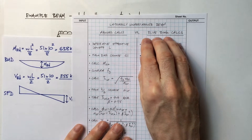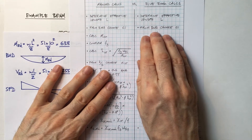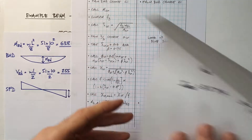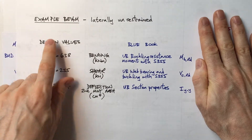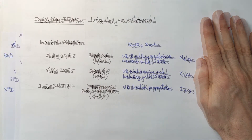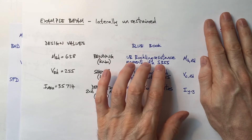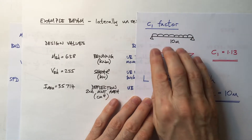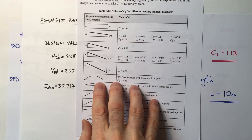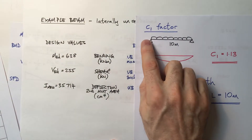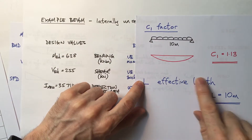If you're going to use the blue book method, you still have to work out the effective length and C1 factor, and then you just look up the buckling resistance moment in the blue book. Here's the beam summarised with its design values — section properties and shear just the same as for a restrained beam, buckling resistance moment to be looked up in the blue book. The C1 factor for a UDL with pin supports gives a parabolic bending moment, so C1 is 1.13. It's pin supported so the effective length is its actual length — 10 metres.